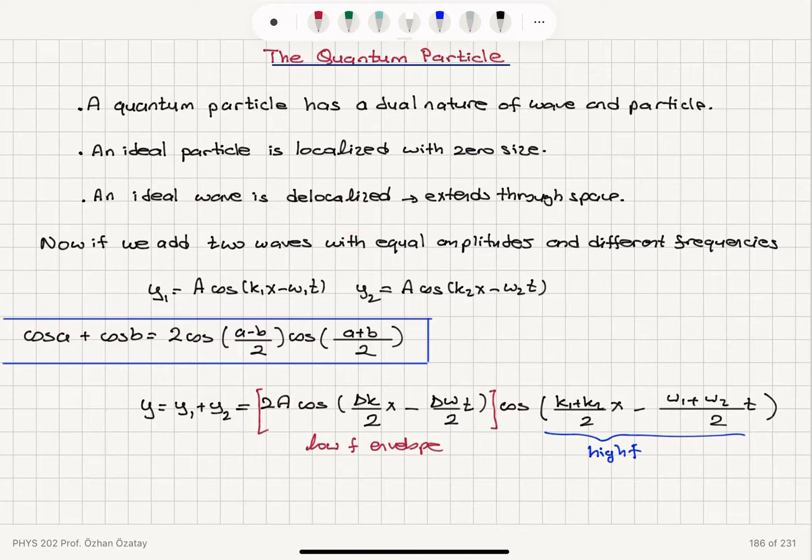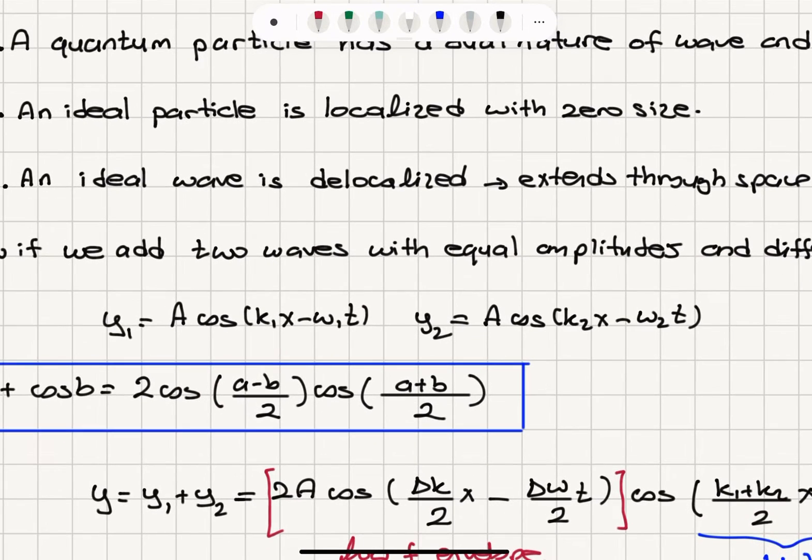An ideal wave, on the other hand, is delocalized. It extends through all space. Now if we add two waves with equal amplitudes and different frequencies,